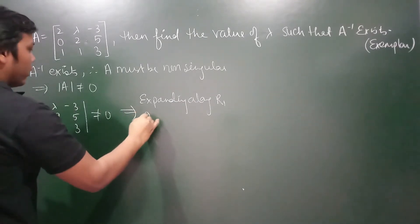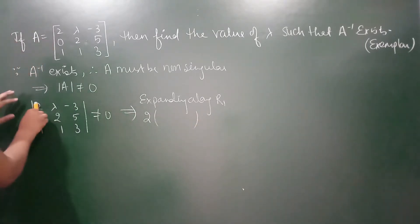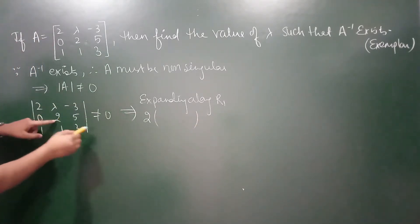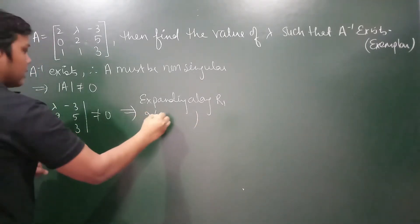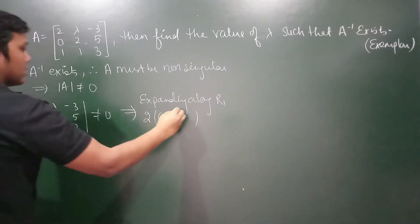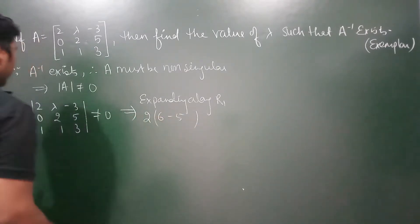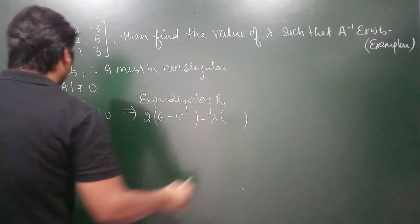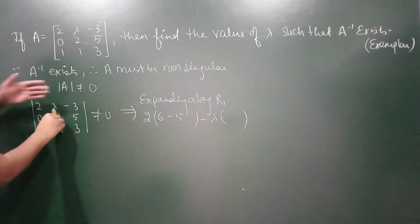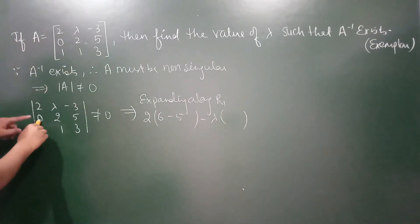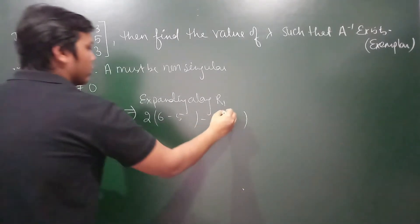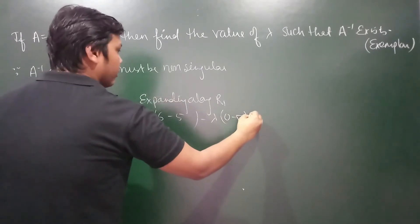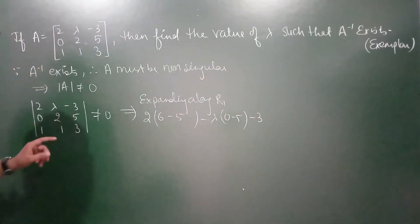यह हो जाएगा 2 times of — इसको हैट कीजिए — 2 times of (3 minus 5), then minus lambda times of (0 minus 5), and then minus 3 already था पहले से ही.